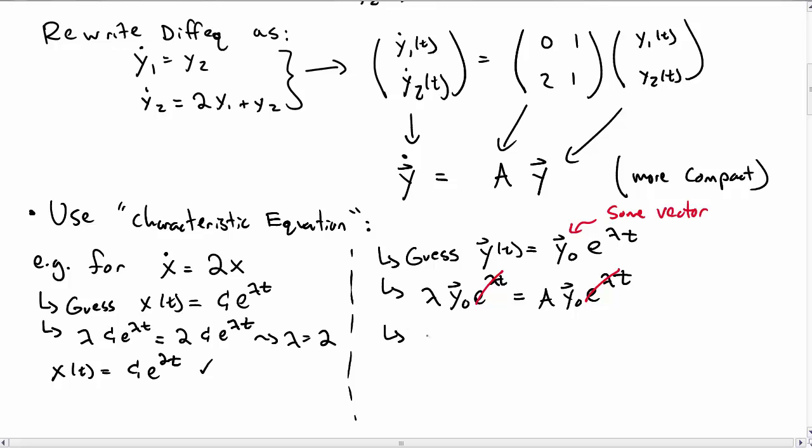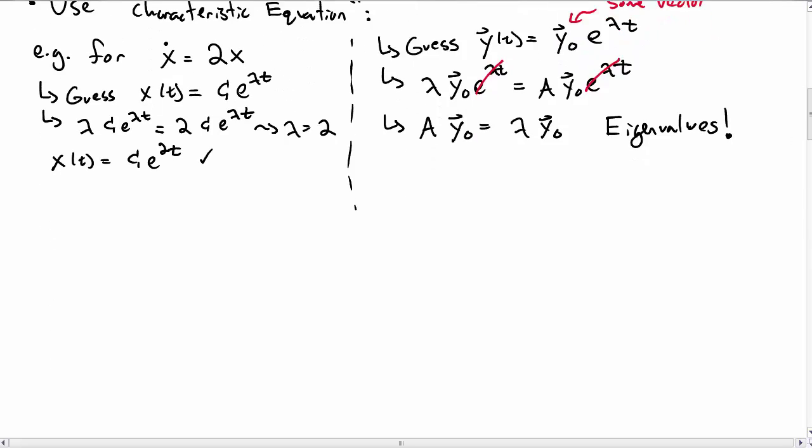We can cancel the e to the lambda t's, but we can't cancel the y naughts. So we're left over with A y naught equals lambda y naught. Wait a second, I know this. This is the eigenvalue equation. So it looks like we're going to need to know something about eigenvalues in order to go any further.